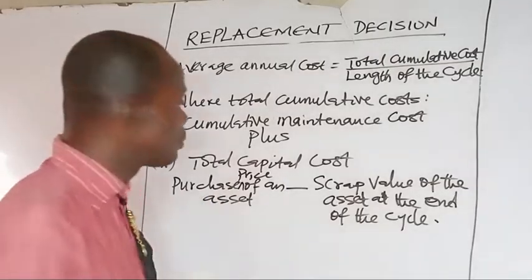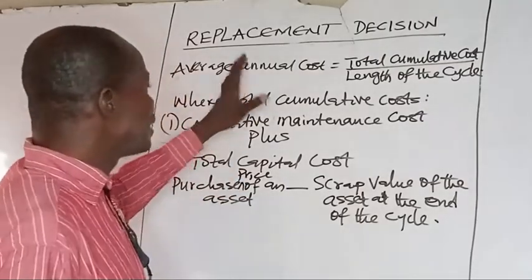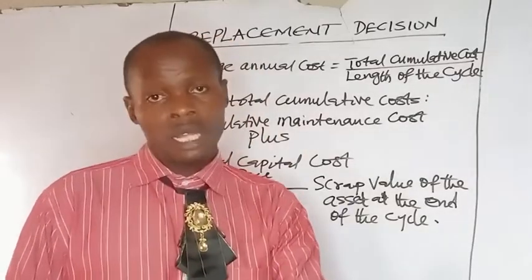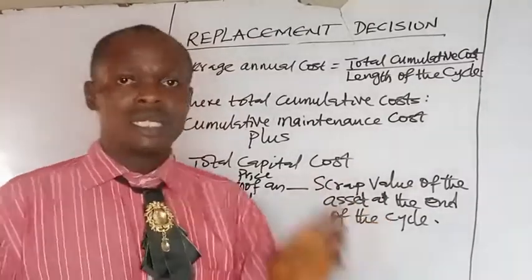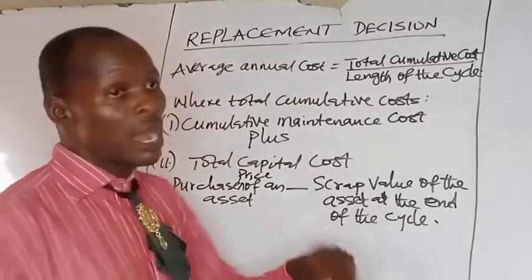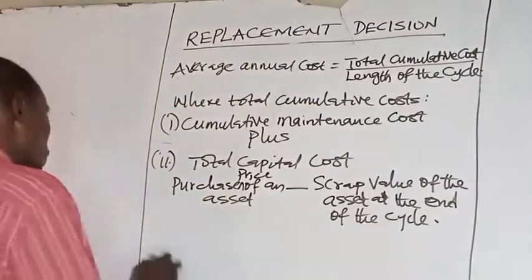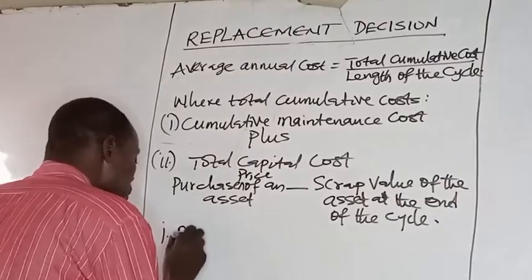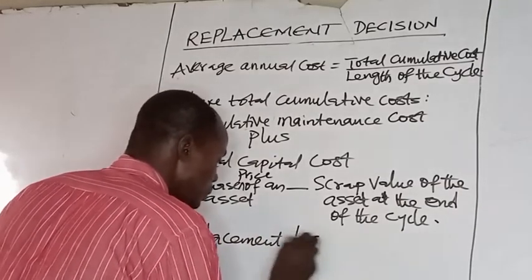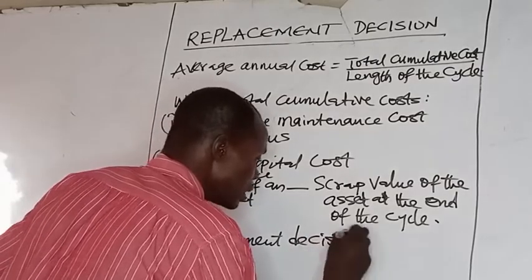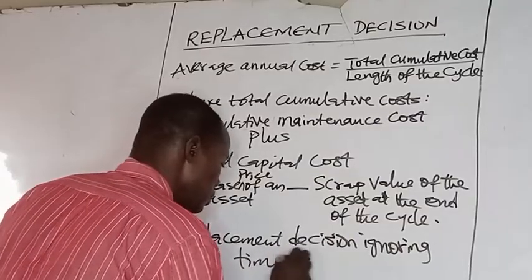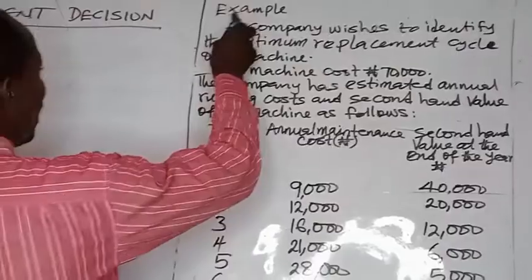We are going to look at replacement decision where the time value is ignored, and replacement decision with the time value — where time value will be given and where there is no time value. I am starting with replacement decision ignoring time value.